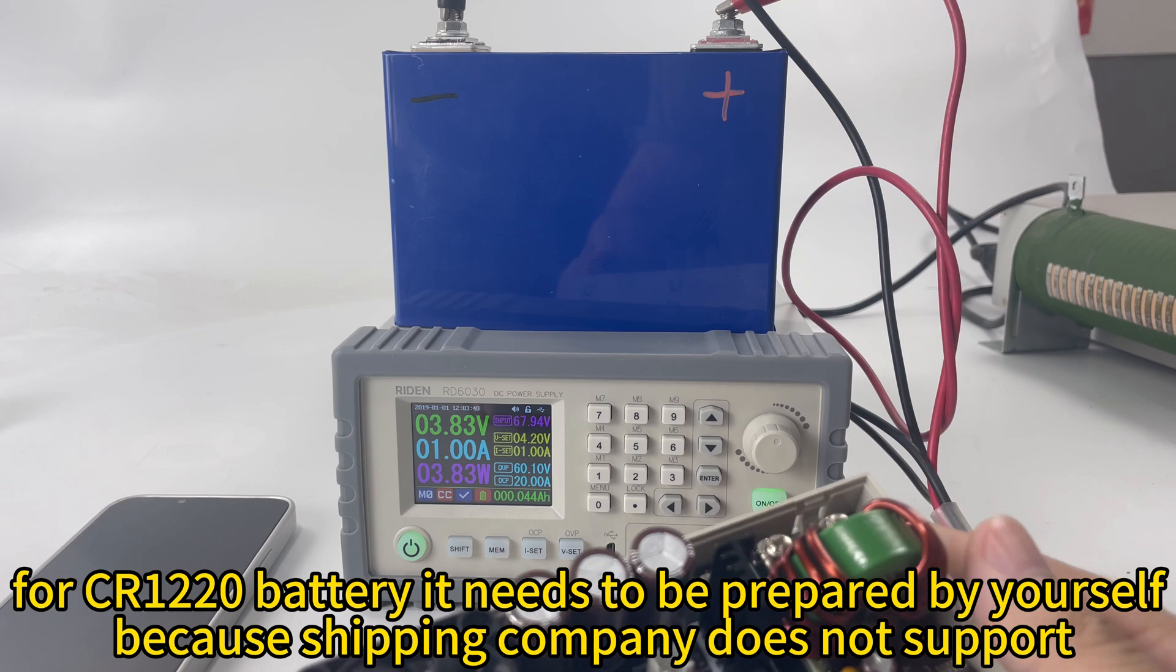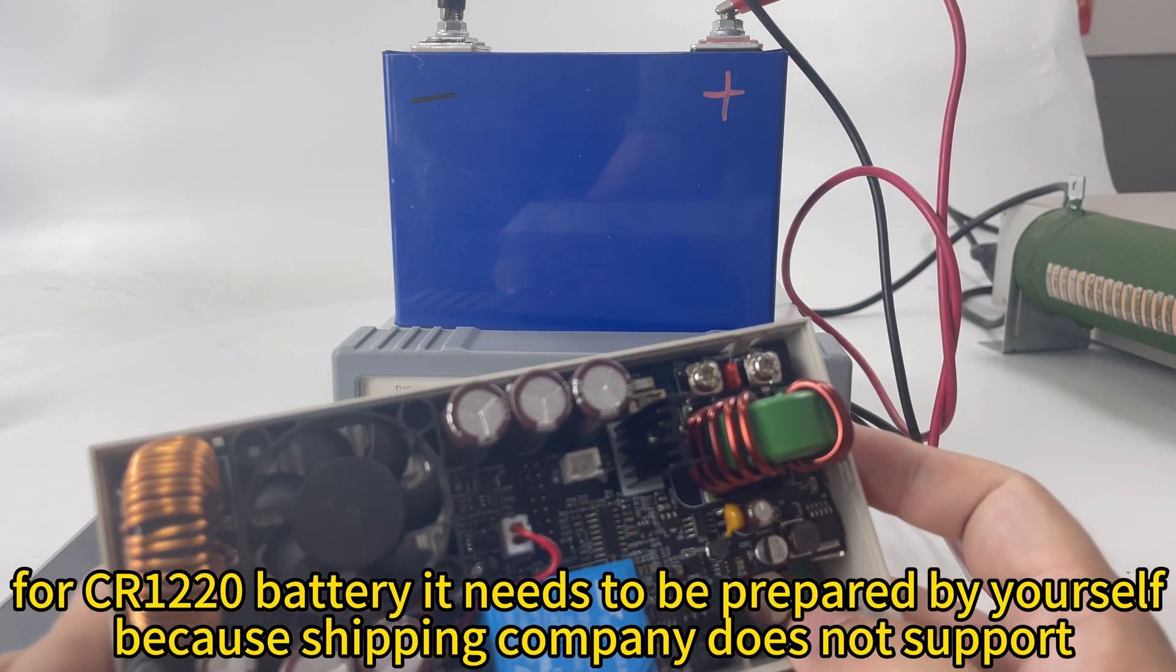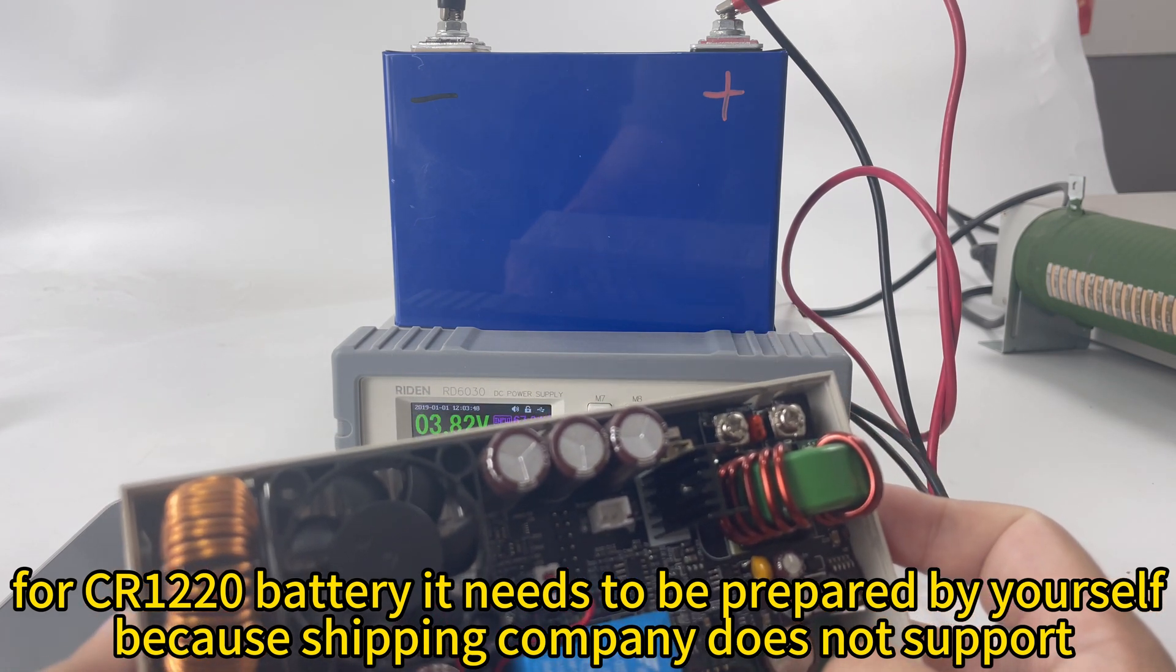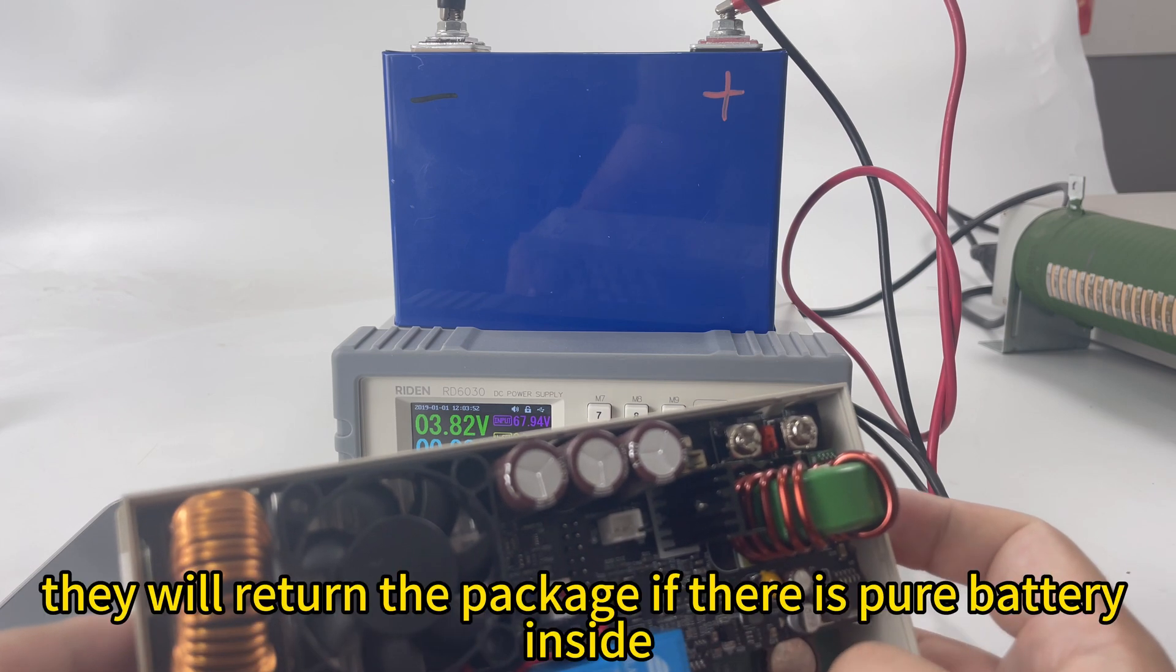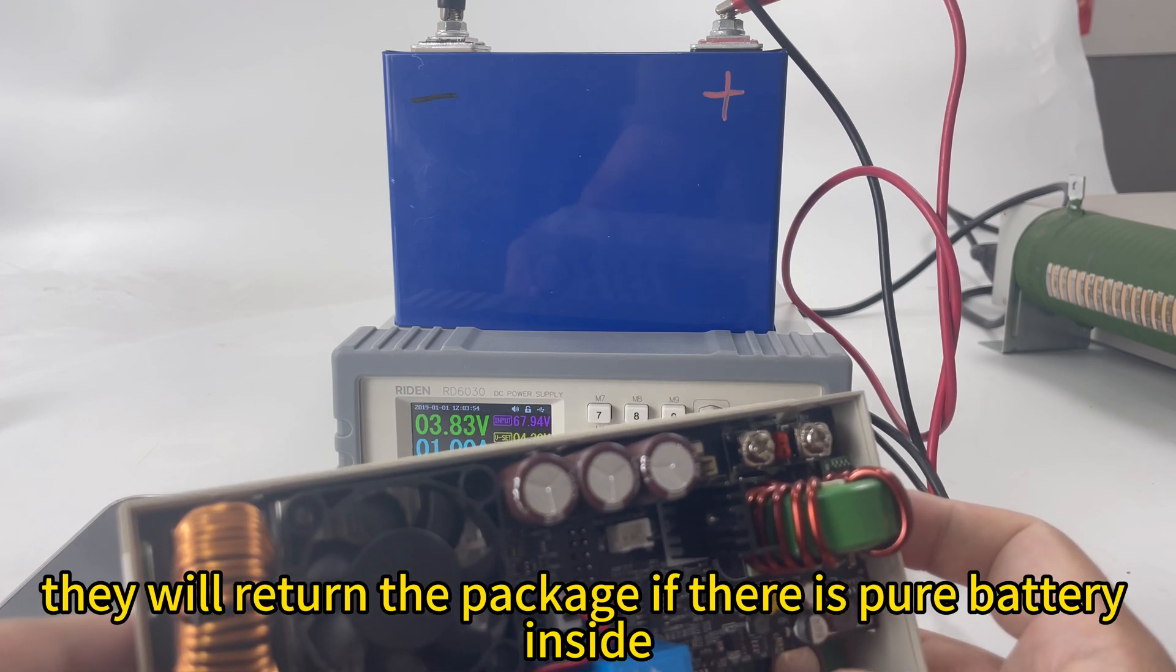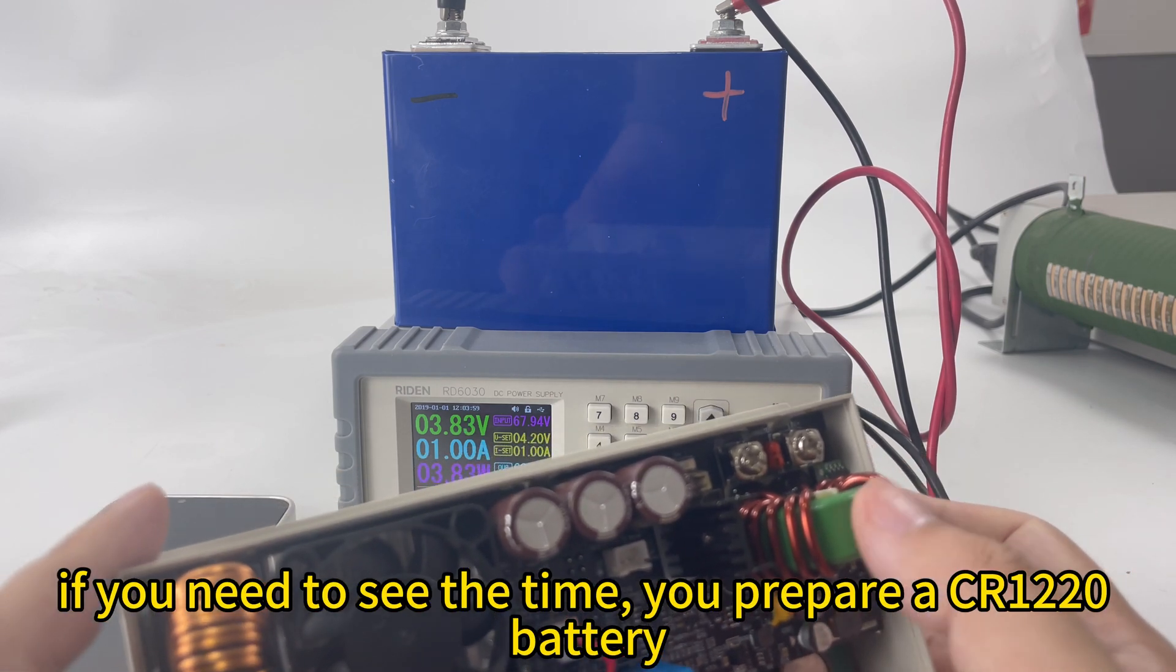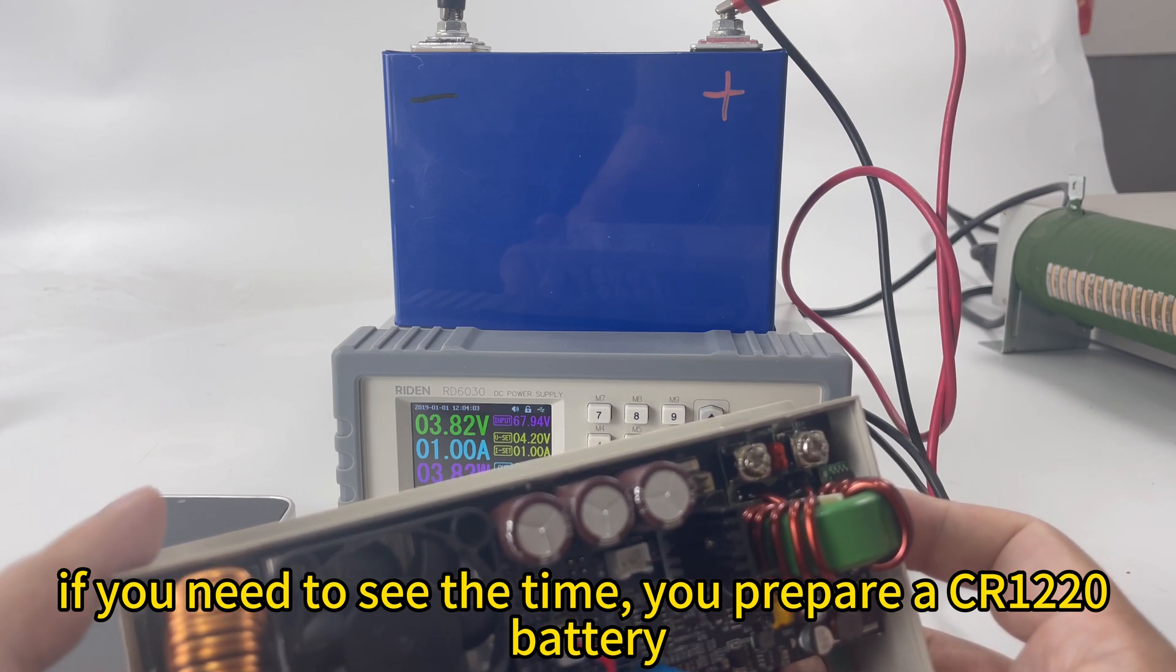And for the battery, it needs to be prepared by yourself. Because for the battery, normally the shipping company does not support battery inside the package. They will return the package if you send a pure battery inside. So if you need the time display, you need to prepare a CR1220 battery.